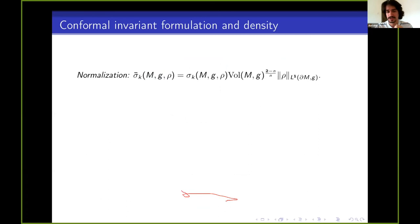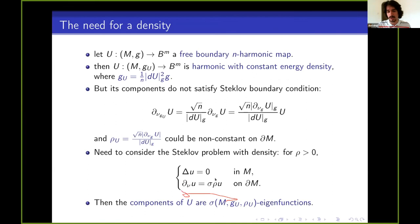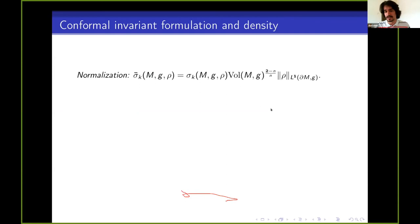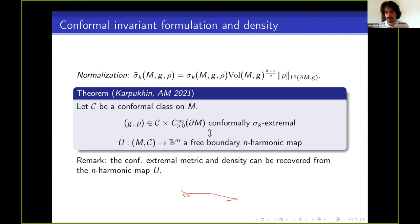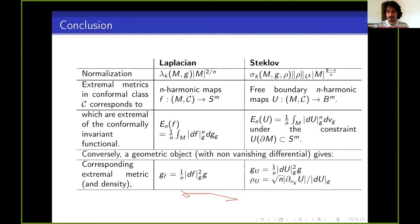To put everything together: with a density, we restate the normalization slightly, replacing the volume of the boundary with the L¹ norm of the density on the boundary. When the density equals 1, we recover the usual Steklov problem and the volume of the boundary — so it is consistent. We then look at a pair of metric and density, allow both to vary, and look at extremal pairs. We have a correspondence between a conformally extremal pair of metric and density and a free-boundary n-harmonic map to the ball. The conformally extremal metric and density can be completely recovered from the n-harmonic map U.